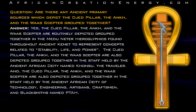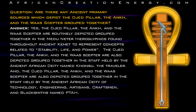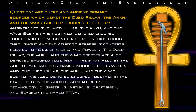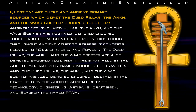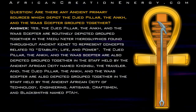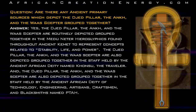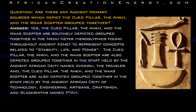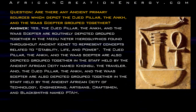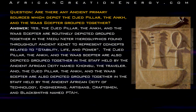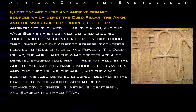Question: Are there any ancient primary sources which depict the Jed Pillar, the Ankh, and the Was Scepter grouped together? Answer: Yes. The Jed Pillar, the Ankh, and the Was Scepter are routinely depicted grouped together in the Meduneto hieroglyphics found throughout ancient Kemet, representing concepts related to stability, life, and power.